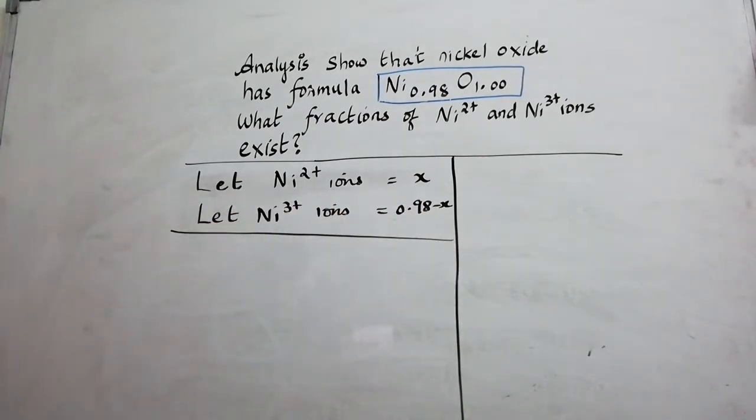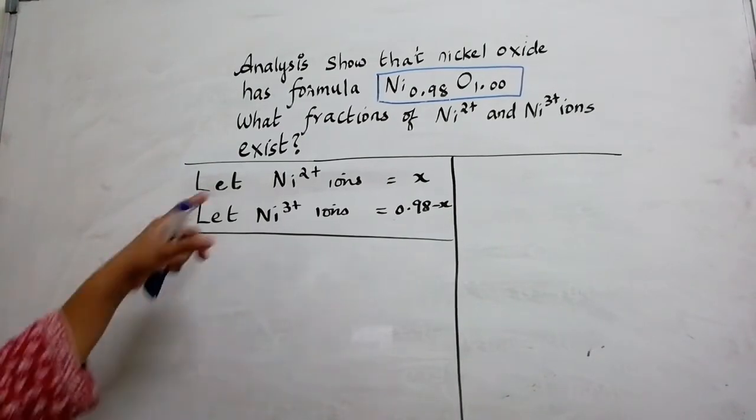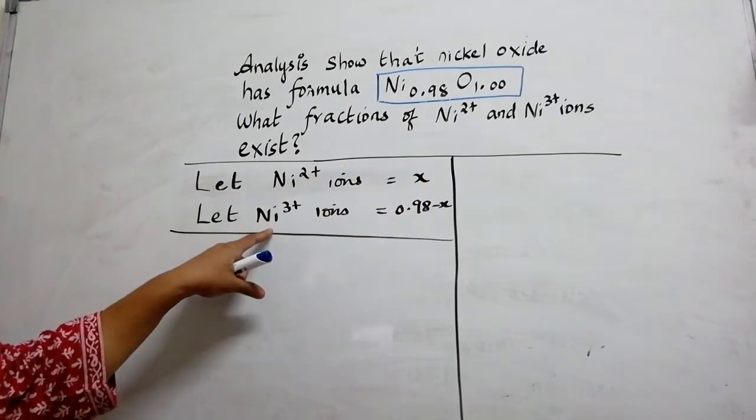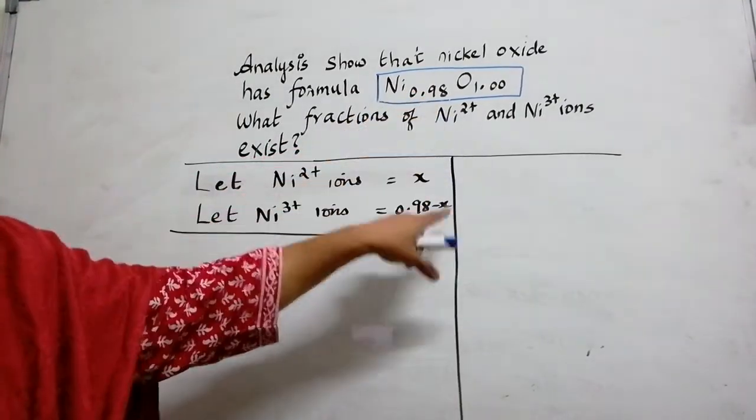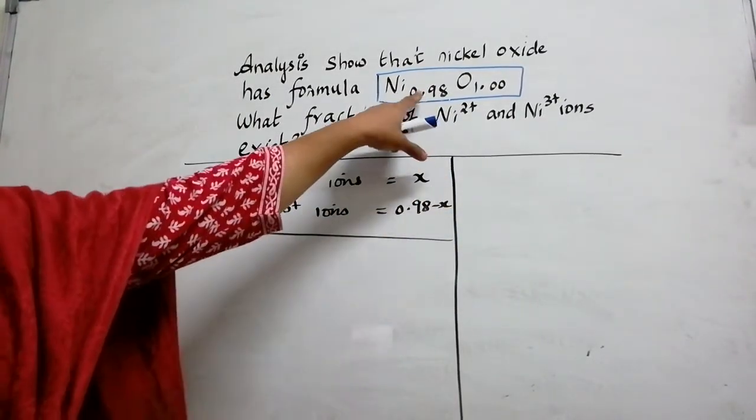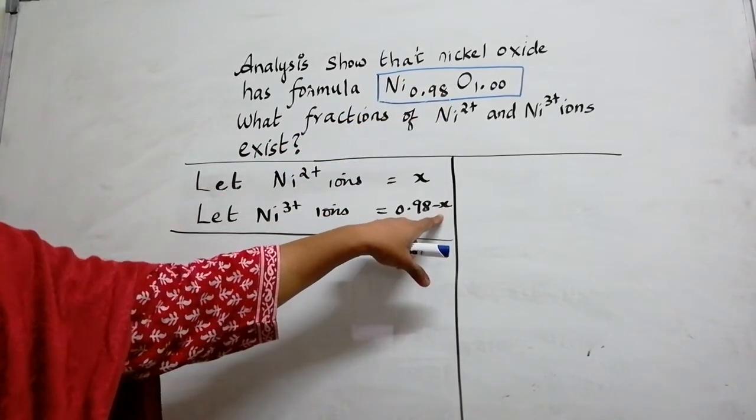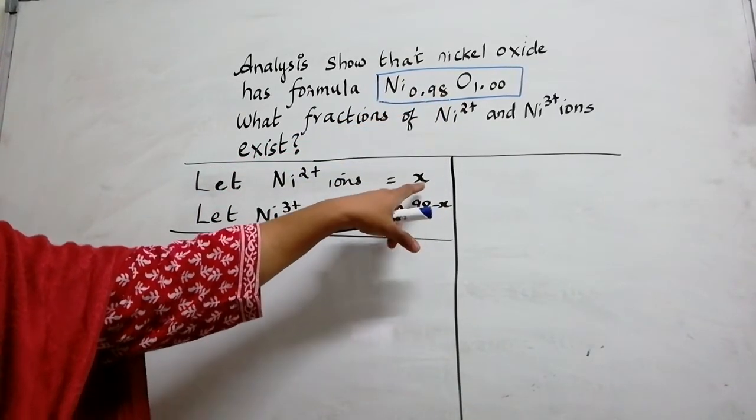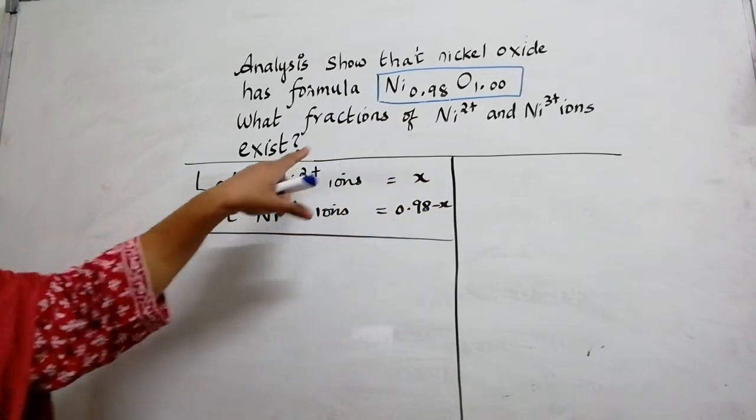I am going to develop a linear equation with the information that I have. Nickel 2+ is taken as X whereas nickel 3+ is taken as total minus X. The total is 0.98 minus X. Now what is the next step? I need to multiply this amount with the charge.